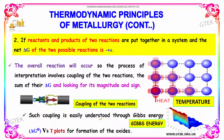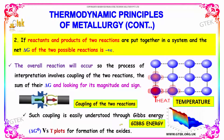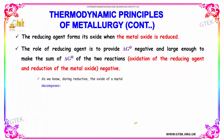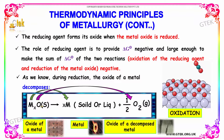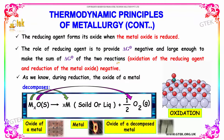Such coupling is easily understood through Gibbs energy delta G° versus T plots for transformation or formation of the oxides. The reducing agent forms its oxide when the metal oxide is reduced. The role of the reducing agent is to provide a delta G° that is negative and large enough to make the sum of delta G° of the two reactions — the oxidation of the reducing agent and the reduction of the metal oxide — sufficiently negative.